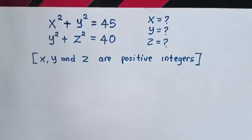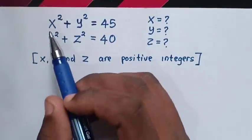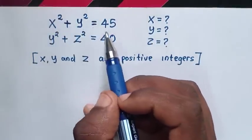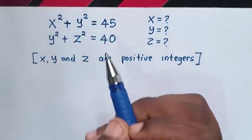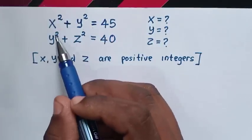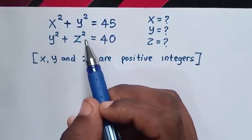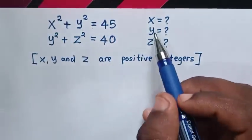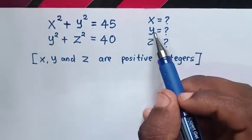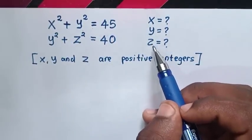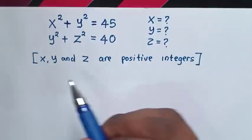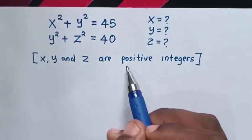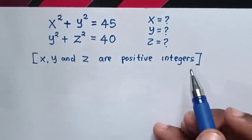Hello. How to solve x squared plus y squared is equal to 45, and y squared plus z squared is equal to 40. Find the value of x, y, and z such that x, y, and z are positive integers.